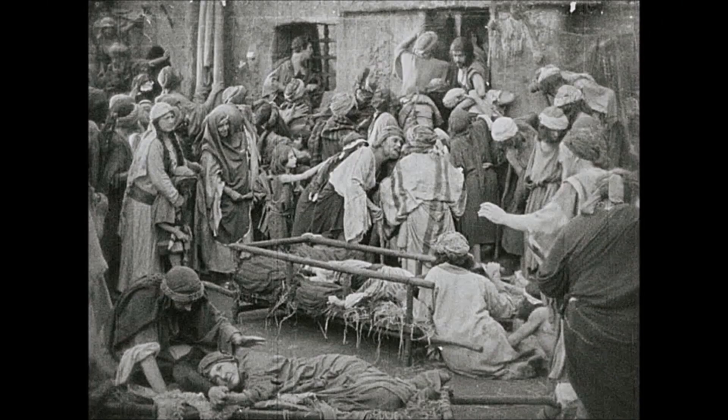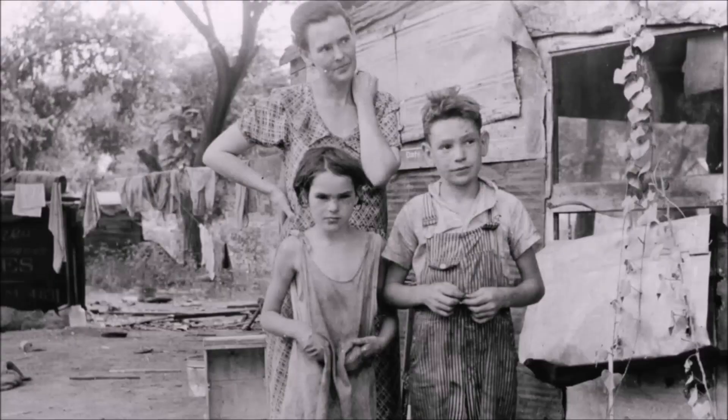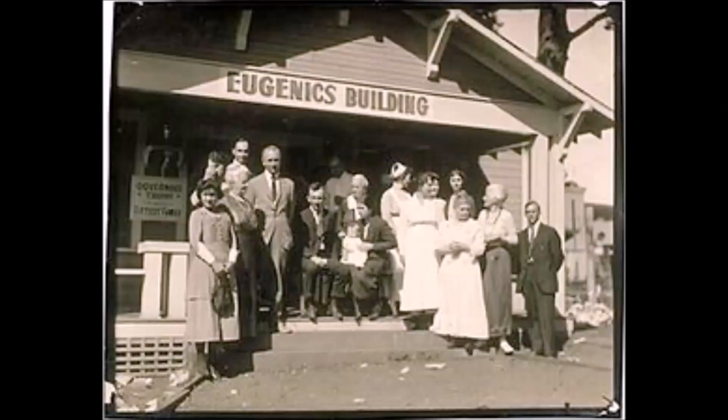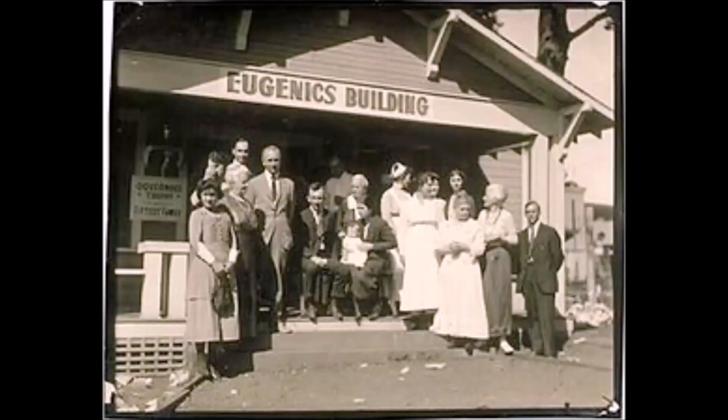Sterilization first targeted the disabled, but was later extended to poor people. American eugenicists endorsed Goddard's intelligence test, and they pushed for laws for forced sterilization. Different U.S. states adopted sterilization laws at different paces. These laws, which the Supreme Court upheld in their 1927 ruling Buck v. Bell, forced over 64,000 people to go through sterilization in the United States.